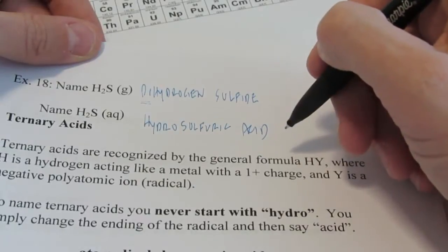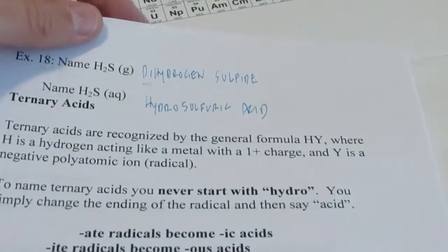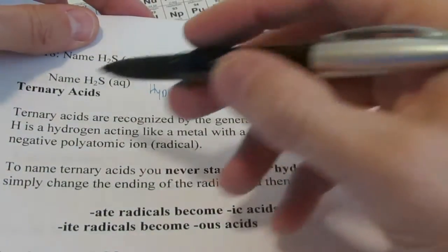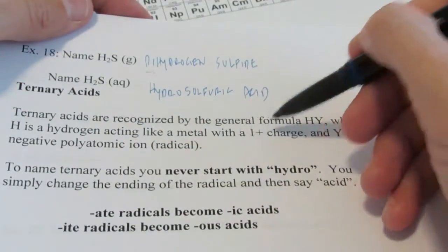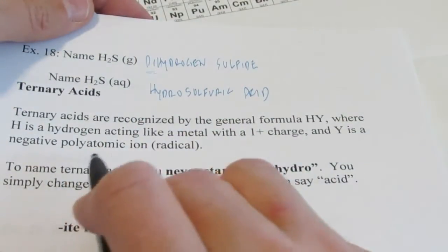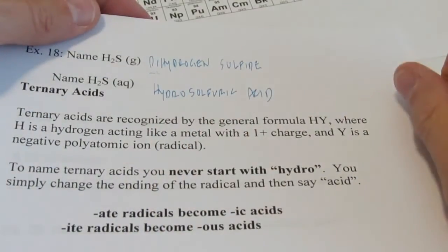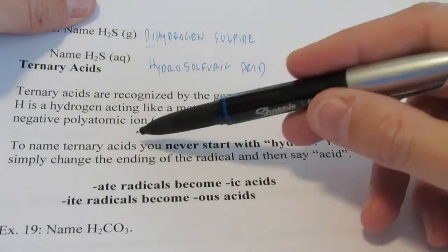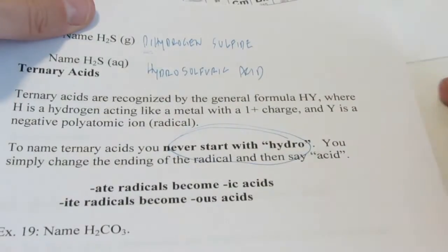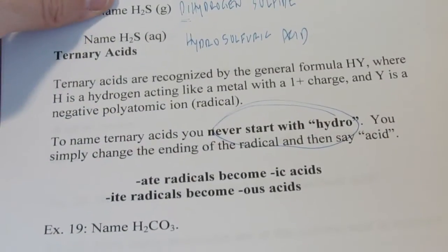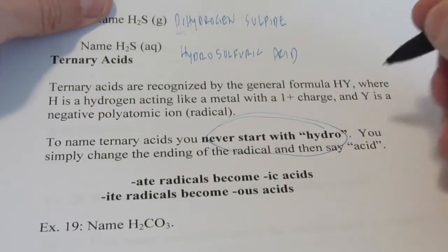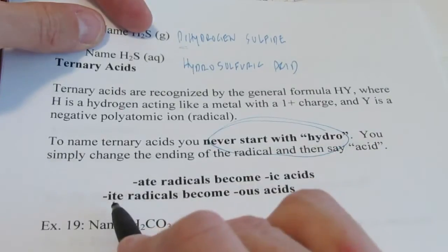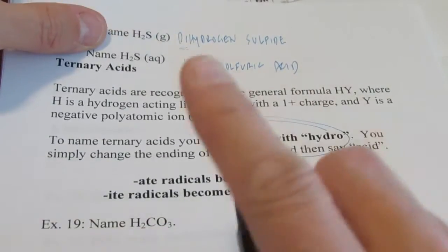You'll see some of those on your homework tonight when we get to assignment 22. Now, ternary acids are recognized by the general formula HY, where H is hydrogen acting like a metal with a 1+ charge, and Y is a negative polyatomic ion or radical. You'll notice it has oxygen in it almost all the time, so we call them oxyacids. To name these acids, we never start with hydro. Simply change the ending of the radical — the polyatomic ion — and then say acid. -ate radicals become -ic acids, and -ite radicals become -ous acids.